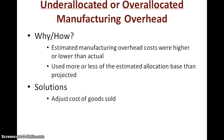Why do we get a situation where we have under-allocated or over-allocated manufacturing overhead? The predetermined manufacturing overhead rate formula uses estimates: estimated manufacturing overhead costs divided by estimated total allocation base. If estimated overhead costs were higher or lower than actual, or if the allocation base was more or less than actual, we would have an under-allocated or over-allocated situation. So almost every time, you will always have over-allocated or under-allocated overhead.